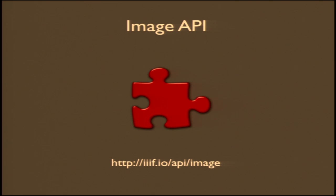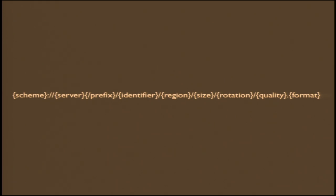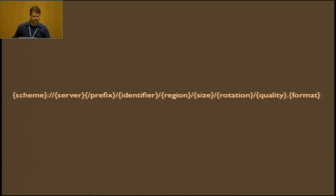I'm going to take a slightly deeper dive into the image API. As Tom showed, the image API is itself a relatively simple URL — a URL that humans can read and make sense of. But most of the time, these IIIF URLs are acted upon by machines, by servers, by software.